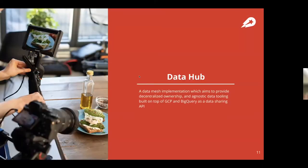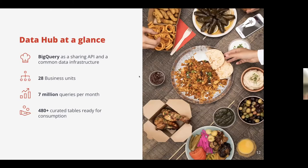For every product there is a user, and for every user there is a data discovery journey. At the scale our data mesh operates, we have about 28 business units, about 7 million queries per month, and more than 480 curated tables ready for consumption, shared across those 28 business units.